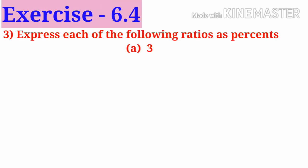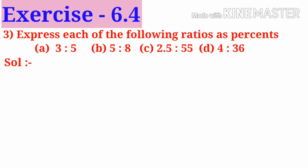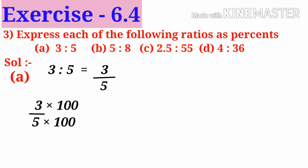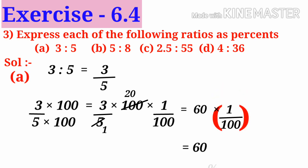Next, number 3: express each of the following ratios as percents. A: 3 is to 5 can be written as 3 by 5. Now multiply both numerator and denominator by 100, that is 3 by 5 into 100 into 1 by 100. On simplification by 5, we get 3 into 20 is 60. Since 1 by 100 is denoted by the percent symbol, 60 percent is the answer.